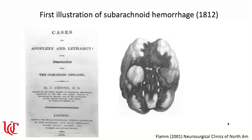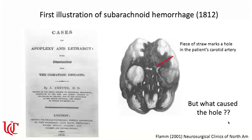The first illustration of a subarachnoid hemorrhage was in 1812 by a British physician named Shane. As you can see in the picture, there's a thick layer of blood at the base of the brain surrounding the blood vessels. This picture has a piece of straw marking a hole in the patient's carotid artery. So they recognized something was wrong with the blood vessels causing this leakage of blood around the base of the brain, but they didn't understand what caused the hole.